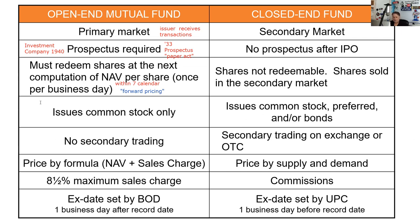The open-end fund — the only money it has to manage is from issuing common shares. Be careful, test takers: we don't mean the different sales charges in A, B, or C shares. What we mean is one share class — one class of equity. They can't issue preferred stock and they can't issue bonds; all they can issue is common stock. And be careful — I'm not saying they can't own preferred stocks and bonds, I'm saying an open-end fund cannot issue preferred stock, cannot issue bonds.